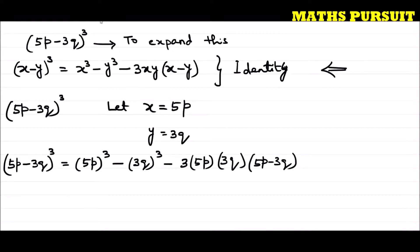So we get: (5p minus 3q) to the power 3 is equal to 5p to the power 3 minus 3q to the power 3 minus 3 into 5p into 3q into (5p minus 3q). Now let us solve this further.